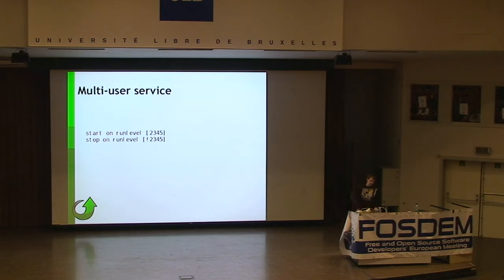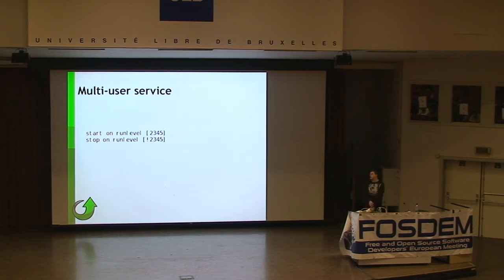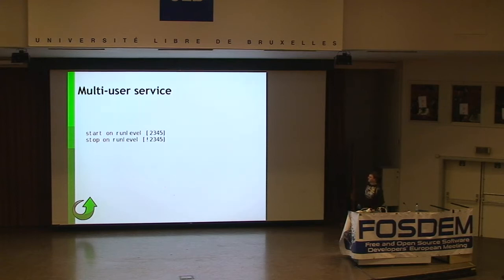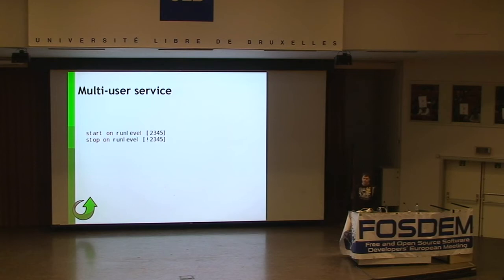One of the problems with Upstart is that while the service manager part is very stable, we haven't got the syntax for defining when services run very well. In SysV init it's easy — you just put the init script in a particular directory like RC2 or RC5. In Upstart you have to define it using events. A simple multi-user service would be defined as start on run level 2, 3, 4, 5 but stop on run level event changing to something not 2, 3, 4, 5. There are lots of problems with that — you can easily mismatch the two sets of arguments.